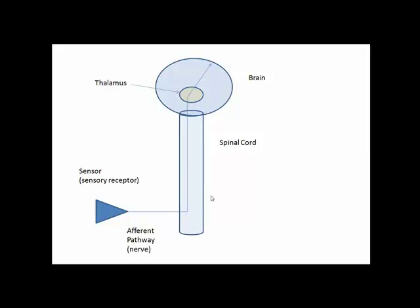The sensory information then moves up — or ascends — the spinal cord to the brain, going through the brainstem and into an area of the diencephalon known as the thalamus. The thalamus acts as a relay station; its function is to relay sensory information to the cerebral cortex. The thalamus picks up the sensory information and routes it to a certain part of the cerebral cortex.